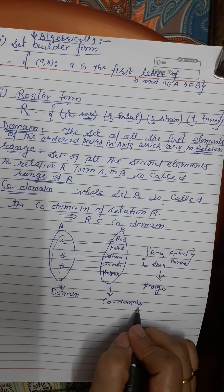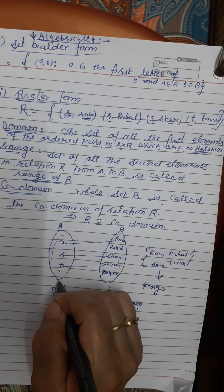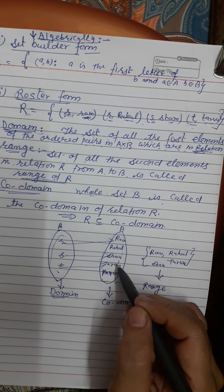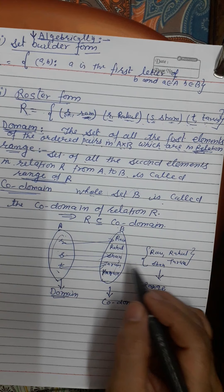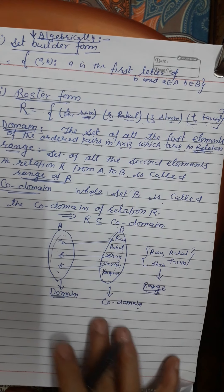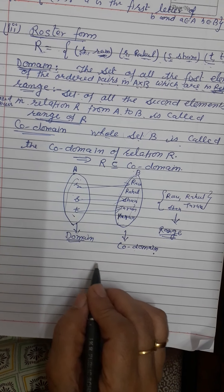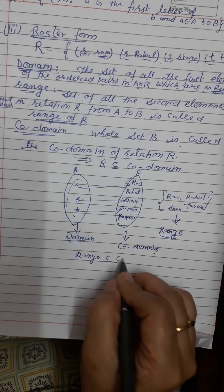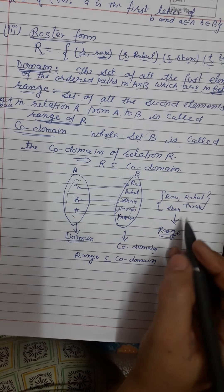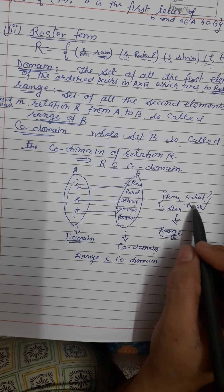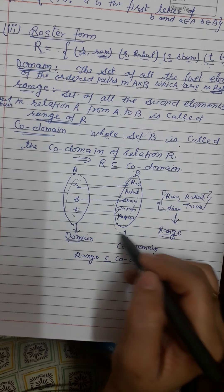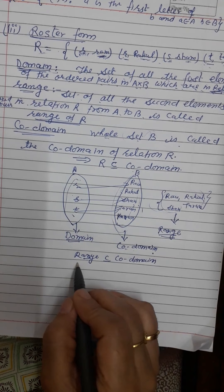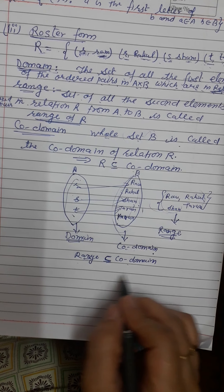So: the set of all first elements of ordered pairs in relation is the domain; the set of all second elements in the relation from A to B is the range; and the whole set B is the co-domain. That is why range is a subset of co-domain — all range elements belong to B (co-domain), but co-domain may contain additional elements not in the range. Thank you.